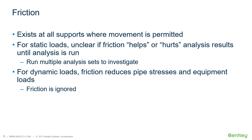Friction will exist at all supports where some movement is permitted. Friction can prevent the free expansion movement of the pipe through the support and create higher stresses in the pipe and higher loads on equipment. But in some instances, friction can actually serve as a guide and prevent static loads from being transmitted to equipment. So it is unclear whether it is conservative to include or ignore friction for static analysis. For dynamic loads, friction reduces pipe stresses and equipment loads, so it is clear that it is conservative to ignore friction. For static loads, there is no rule of thumb — the effect of friction has to be investigated to simulate as closely as possible the real situation.